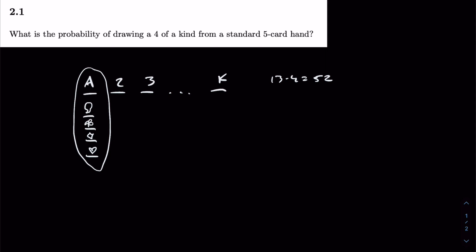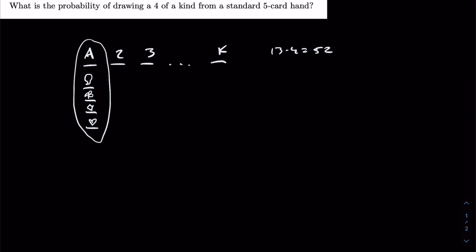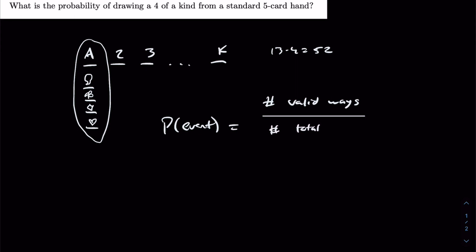When approaching a probability question, it's often good advice to begin by counting the number of valid ways and the number of total ways. The probability of an event is the number of valid ways which satisfy said event divided by the number of total ways that a particular trial or game could result.